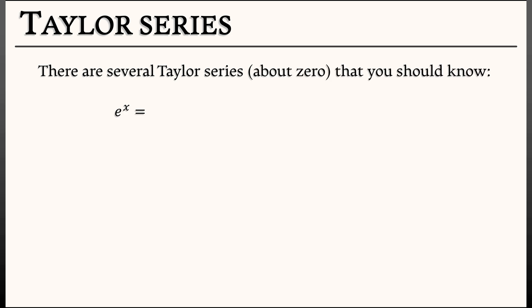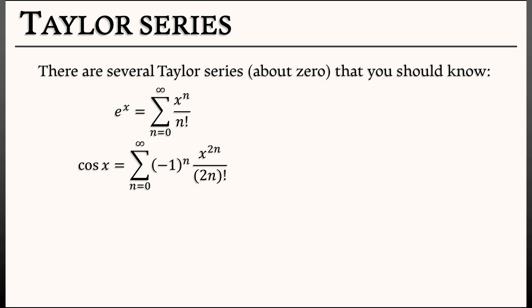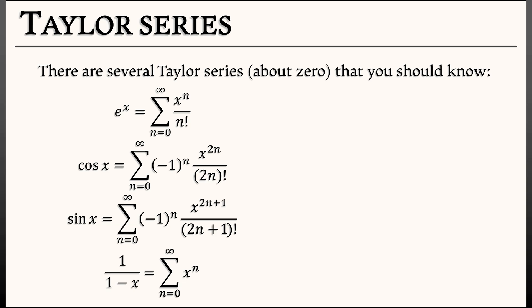For example, e to the x is the sum as n goes from 0 to infinity of x to the n over n factorial — that's a biggie. As are the Taylor expansions of sine and cosine: cosine of x is the sum as n goes from 0 to infinity of negative 1 to the n times x to the 2n over quantity 2n factorial. This is an alternating series with all the even terms of e to the x. The corresponding odd terms give the expansion for sine: sum as n goes from 0 to infinity of negative 1 to the n, x to the 2n plus 1, over quantity 2n plus 1 factorial. The geometric series is also a biggie: 1 over 1 minus x equals the sum as n goes from 0 to infinity of x to the n. Integrating that and adjusting signs gives a series for log of 1 plus x — the sum as n goes from 1 to infinity of negative 1 to the n plus 1 times x to the n over n, not n factorial.